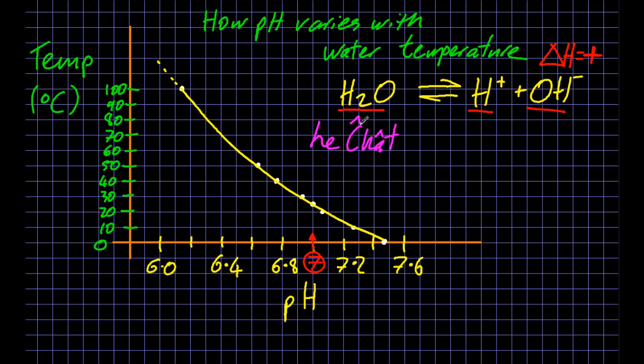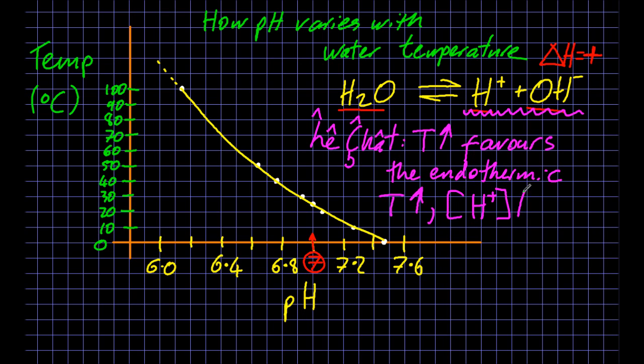And so from Le Châtelier's principle, if the temperature goes up, it's going to favor the endothermic side. You heat it up, it tries to cool itself down, which means it shifts to the products. Temperature up, the hydrogen ion concentration goes up, and the pH goes down.